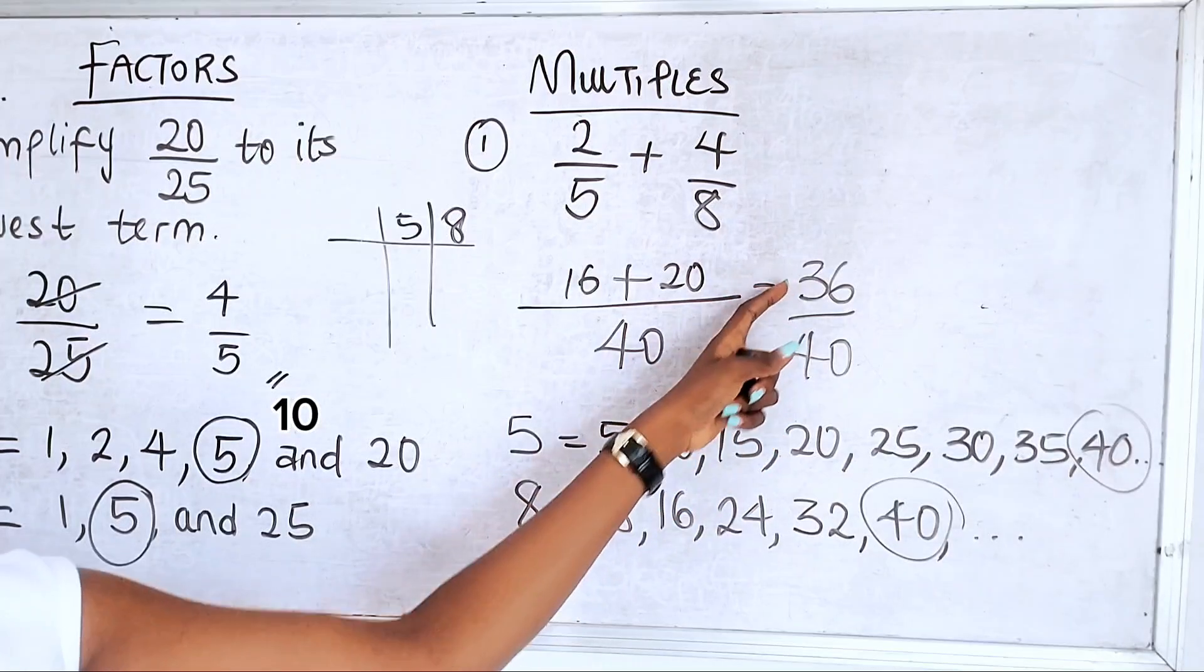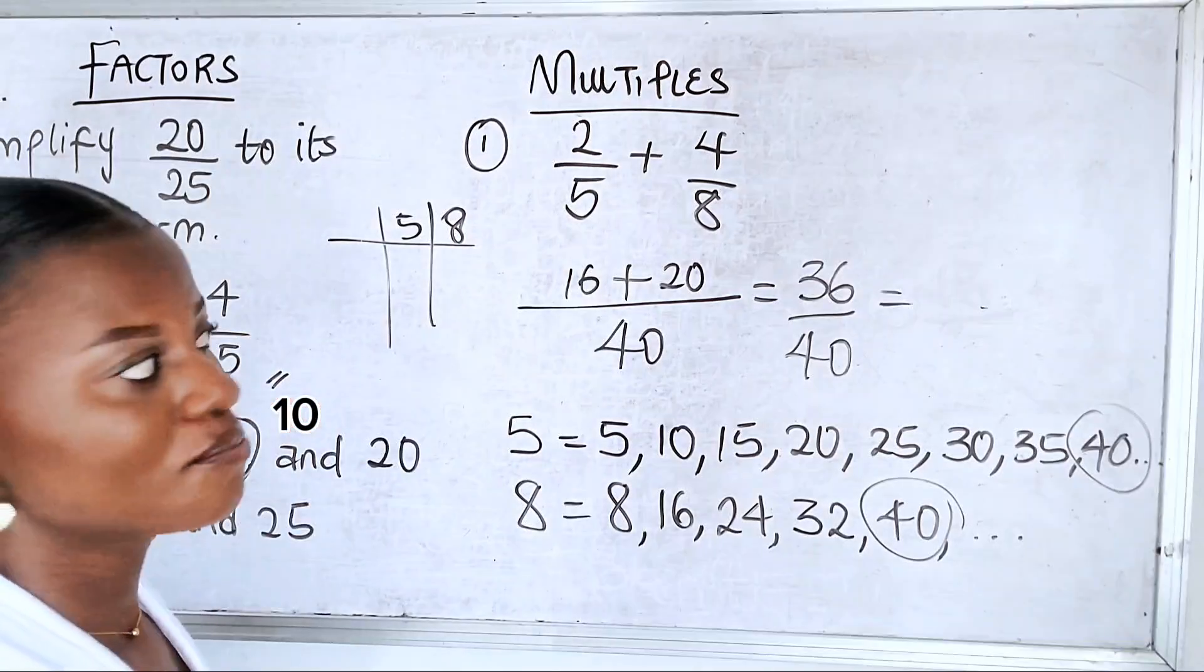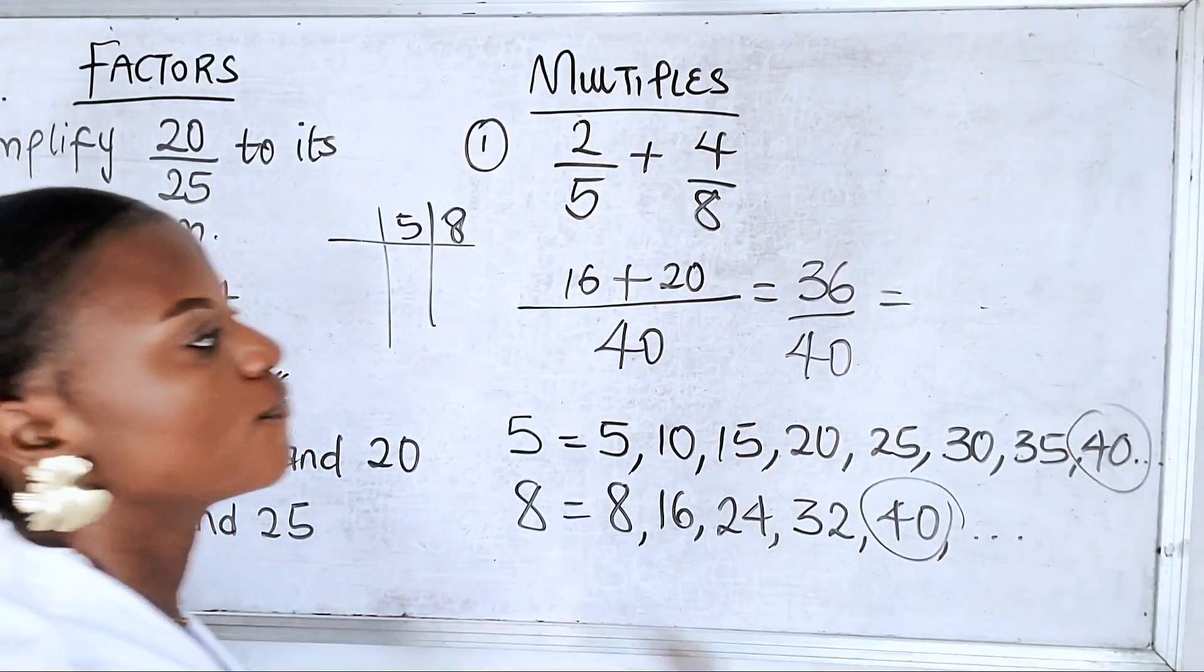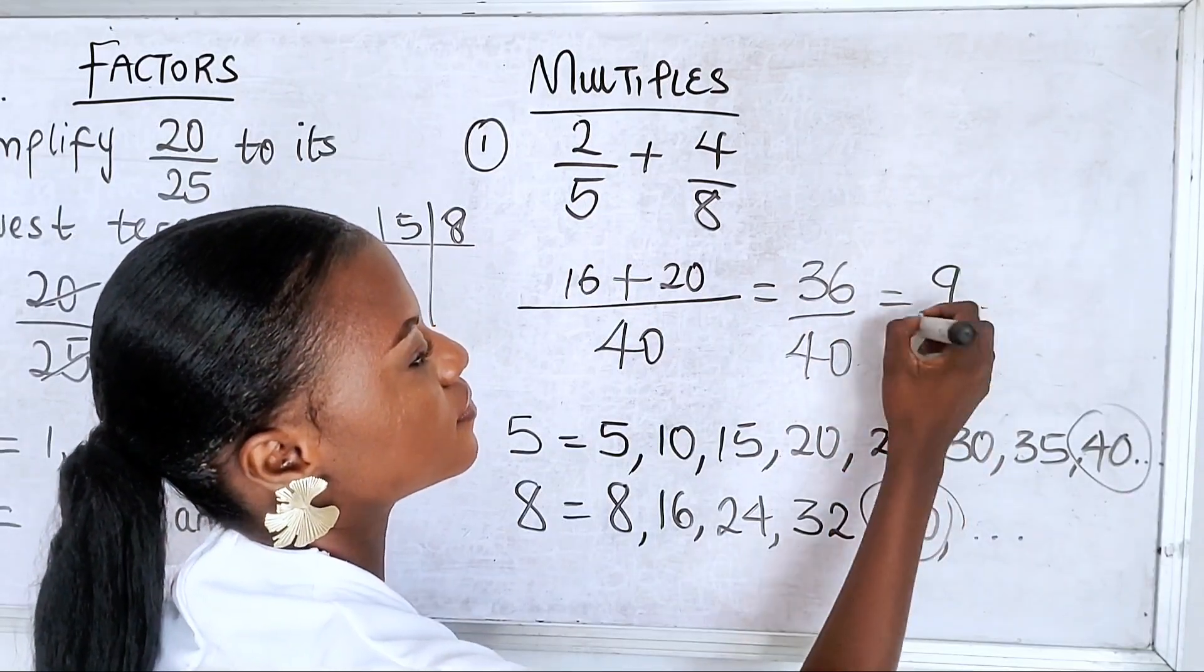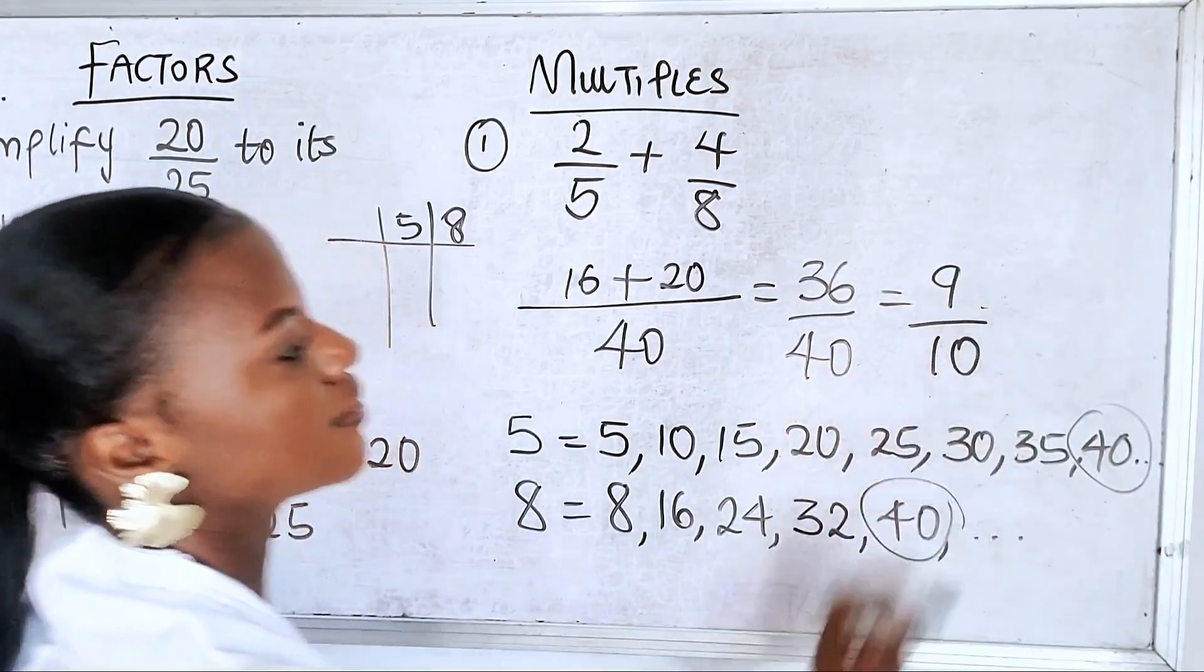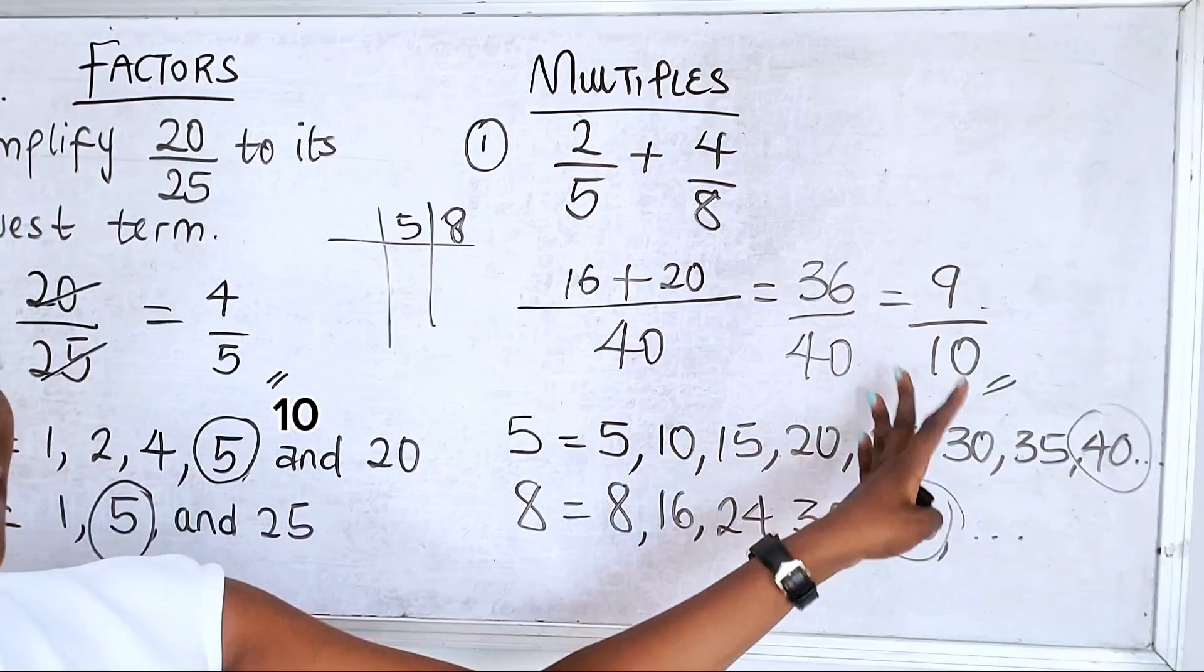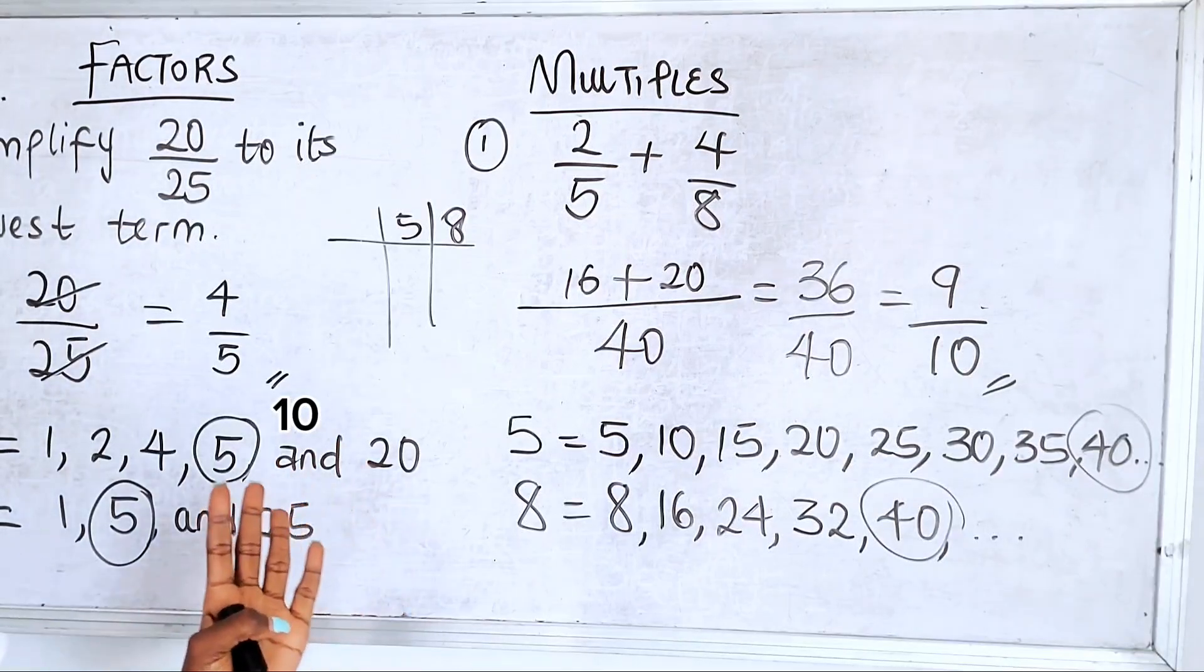What's the highest number that can go here and go here? That takes us to factors. The highest number that can go in 36 and go in 40 simultaneously is 4. So 4 here is 9. 4 here is 10. This is a proper fraction, and so you can leave it like this. So I hope this example was able to show you the difference between multiples and factors.